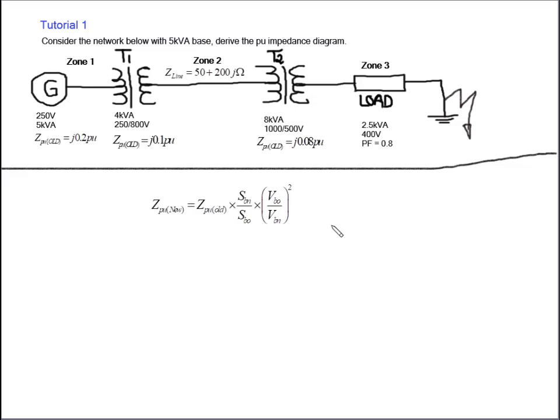And SBO, or SB old, which is the old volt ampere of the element that we're calculating. In this case, the generator has a 5 kVA base, so which means our SBO will be 5 kVA times the VBO, which is the base voltage of this section, the old one, divided by the VBN, which is the base voltage, the new base voltage of the section, which is also 250 volt in this case, the whole squared, as you can see in the formula.